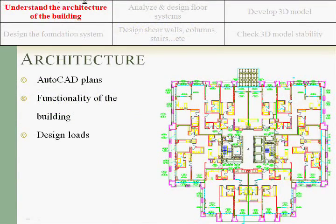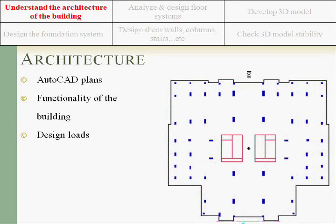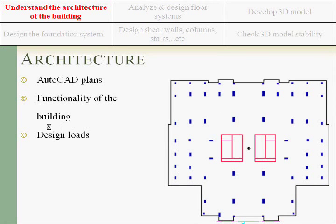In the architecture phase, we understood the AutoCAD plans and concentrated on the main connection between structure and architecture: the column sizes and locations. From the architectural drawings we obtained the design loads used in the analysis of the slabs.